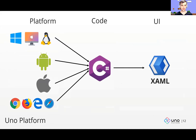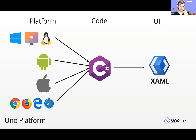Reviewing the diagram: we have a single code base in C# for business logic, XAML for the UI, and all platforms — Windows, Android, iOS, the web via WebAssembly, and even macOS and Linux — can use the same code base. We now have support for Linux, and soon Tizen as well. It's a complete set of platforms, be it mobile, desktop, or the web, all from one code base.